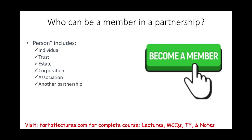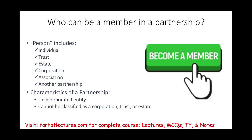What are the characteristics of a partnership? It can be an unincorporated entity. Simply put, you can have a partnership without any formal paperwork — just two individuals agree to conduct business together and you have a partnership. However, a partnership cannot itself be classified as a corporation, trust, or an estate, though those entities can be a member of the partnership.